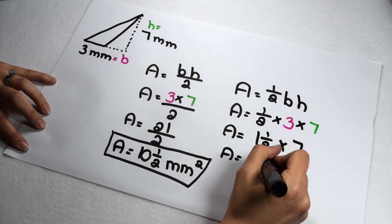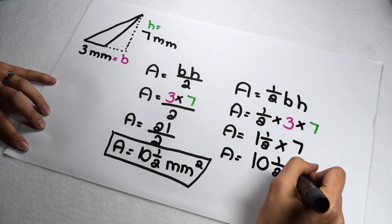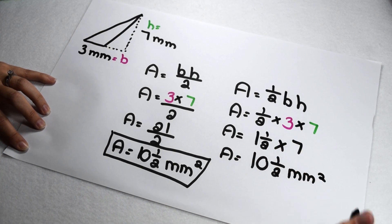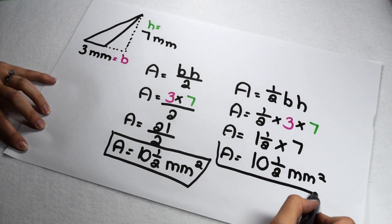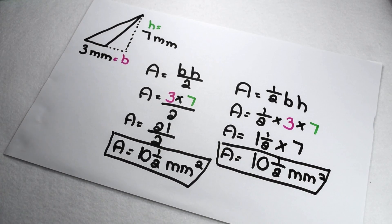One and a half times 7 also gives me 10 and a half. I still need to label my answer with square millimeters. So both equations give me the result of area being 10 and a half square millimeters.